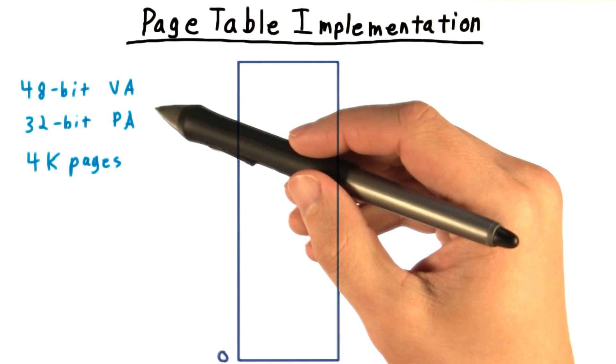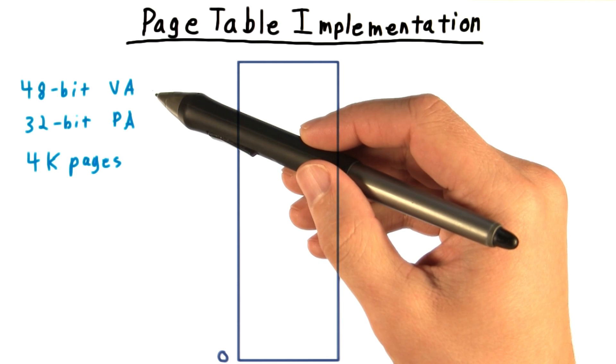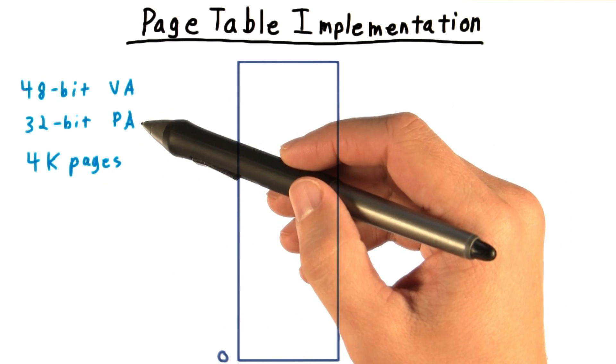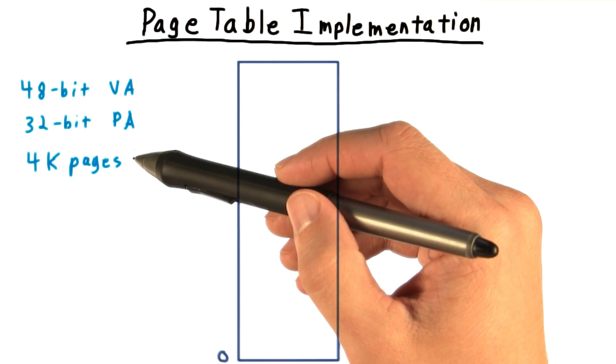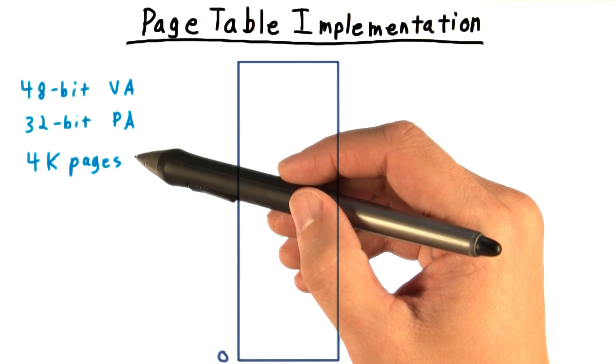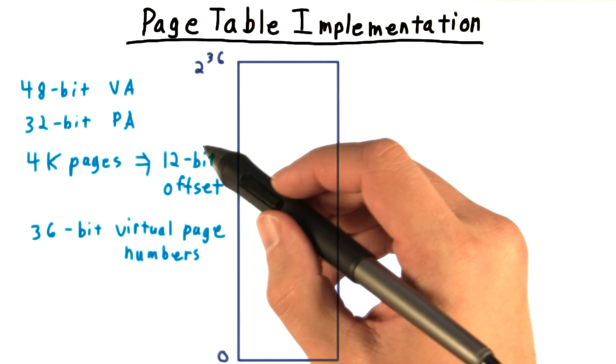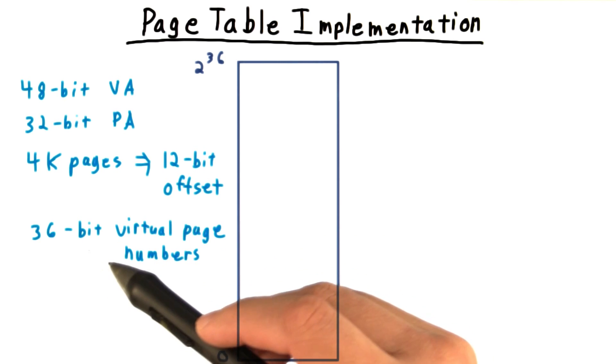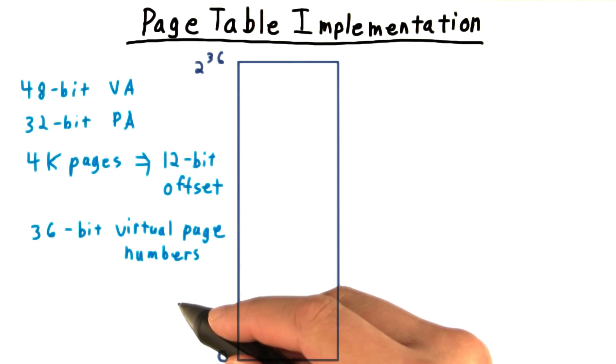Suppose that we have a 48-bit virtual address and a 32-bit physical address. And let's say page size is 4K. We've used up 12 bits for the offsets, leaving 2 to the 36 possible virtual page numbers.